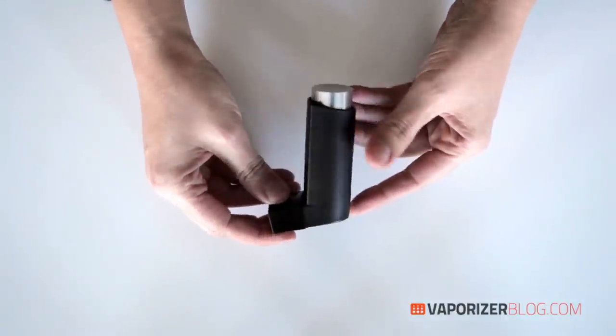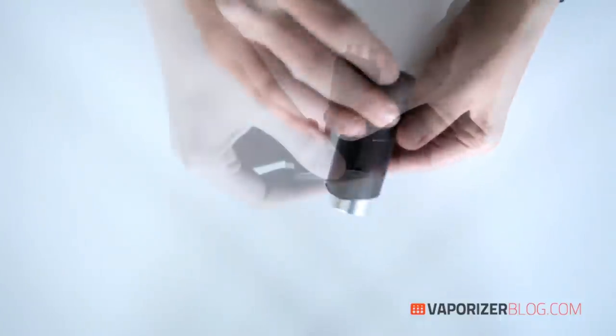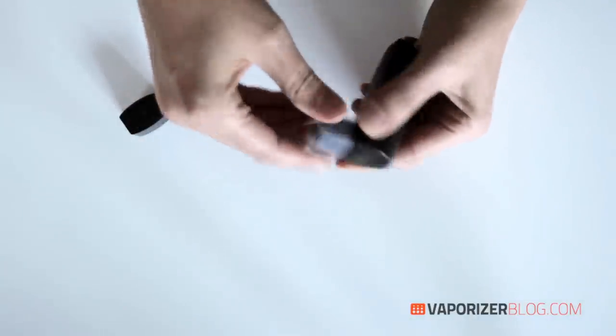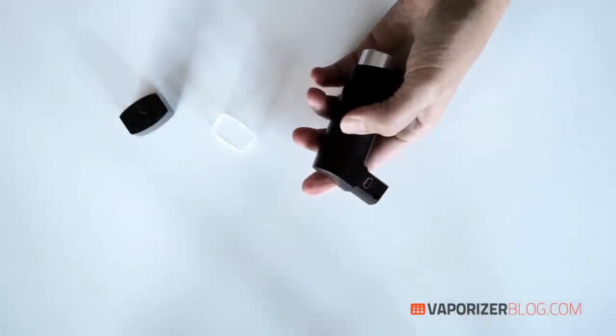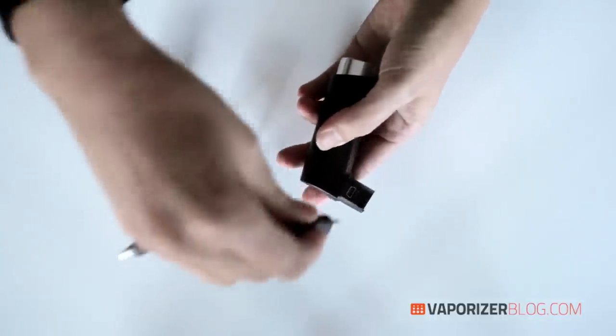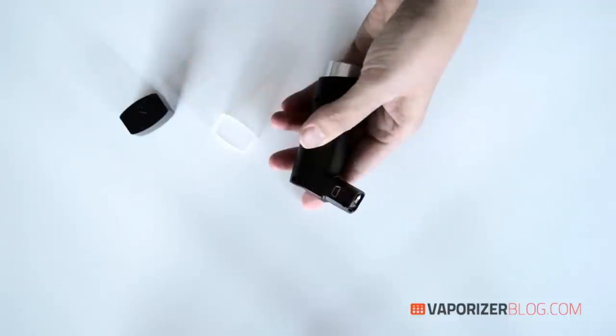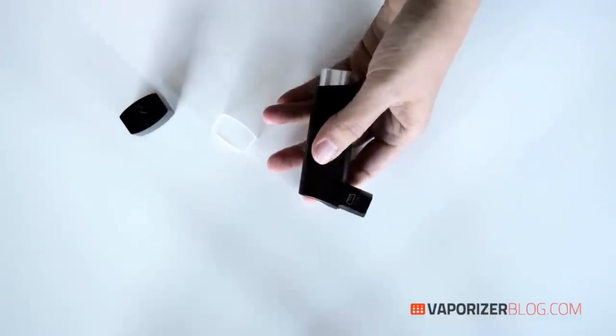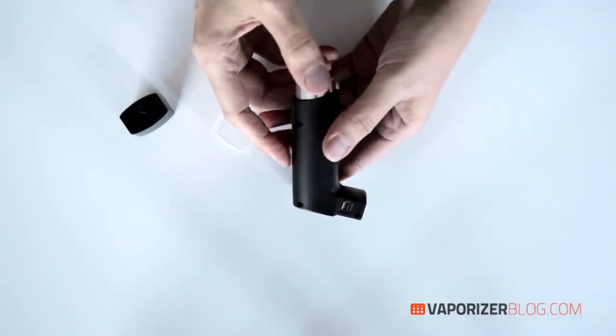So let's talk about charging up the Puffet. Basically you just take your USB charger, you have to remove the cap here and this protective shield and you basically plug in your USB right here in this connection. And that's a standard USB source and it takes about two and a half to three hours for a full charge and you should get between 25 and 30 cycles on a full charge.